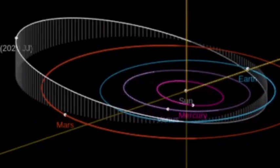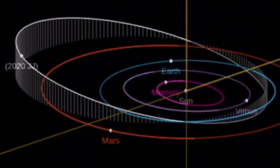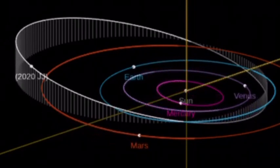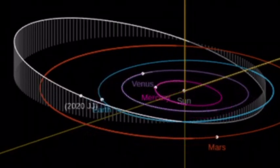NASA keeps an online database of close approaches by asteroids and other near-Earth objects going back to 1900, and 2020-JJ comes in as the sixth closest approach ever recorded.